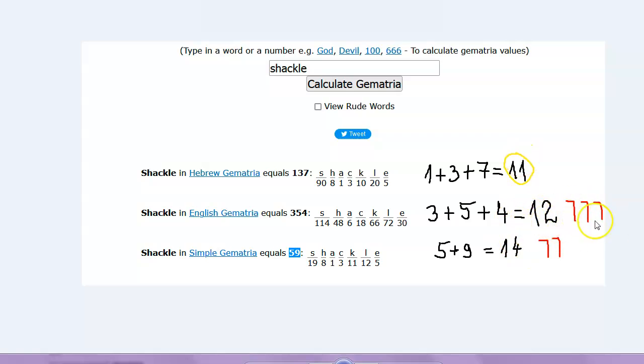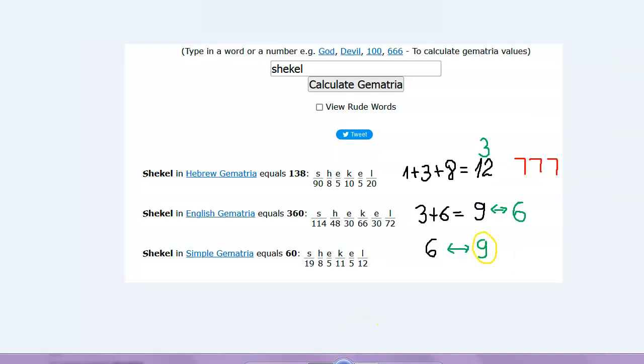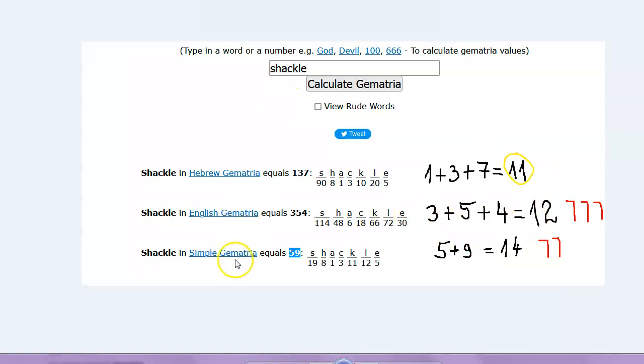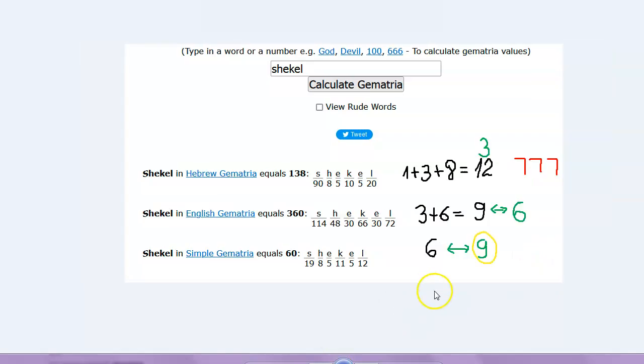11, 12 is the triple seven, is the reverse 21 which is triple seven, and 14 is the double seven - two sevens makes 14. So the seven code is present. Observe some type of progression of the seven code from the Hebrew 12 in the shackle to the English and Simple gematria for the shackles. Interesting.